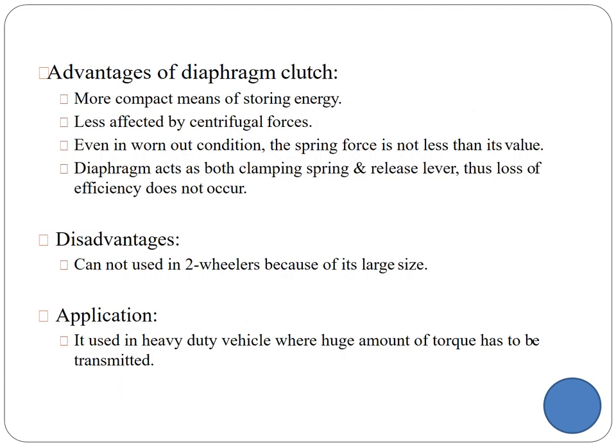The major advantage of the diaphragm clutch is that no lever is used, making it compact and with very little effect of centrifugal force. However, due to its large size, you cannot use it in a two-wheeler. It should be used in heavy-duty trucks because the torque transmission is more — that is why it is used for heavy-duty trucks.